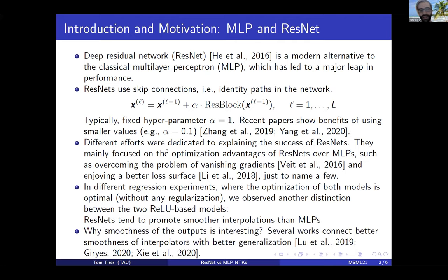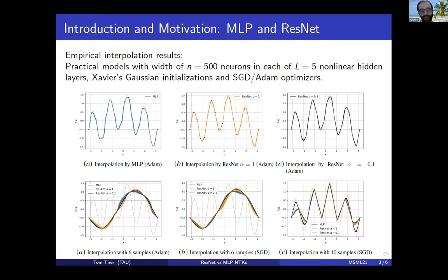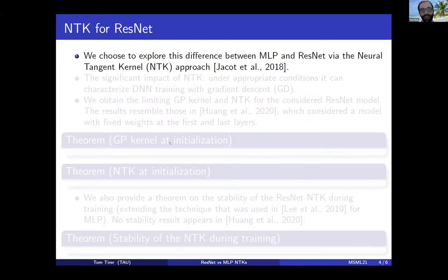Smoothness is an interesting property since several works connect it with generalization. Here are some experiments: we show practical models with L equals five nonlinear hidden layers, each with 500 neurons, typical initialization, and typical optimizers. We see the interpolations of MLP in blue, ResNet with alpha equals one in orange, and ResNet with alpha equals 0.1 in black. The MLP curves are less natural and less smooth than those of ResNet, especially when you moderately attenuate the residual block.